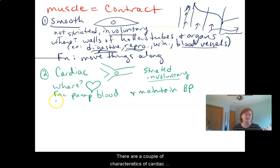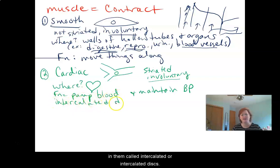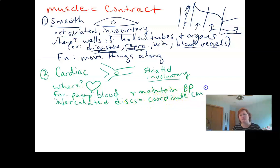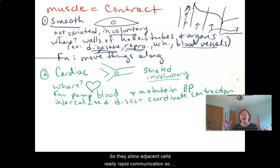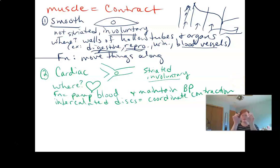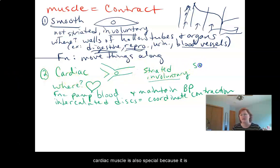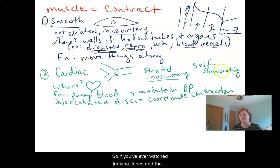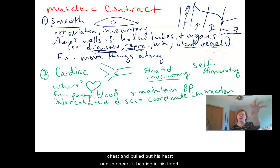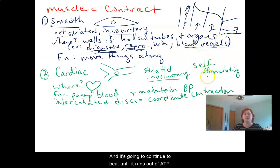There are a couple of special characteristics of cardiac muscle. They have special structures called intercalated discs, and these help to coordinate contraction by allowing adjacent cells rapid communication so they can act together as a unit. Cardiac muscle is also special because it is self-stimulating. So if you've ever watched Indiana Jones and the Temple of Doom — technically, a heart pulled from a chest would continue to beat until it runs out of ATP.